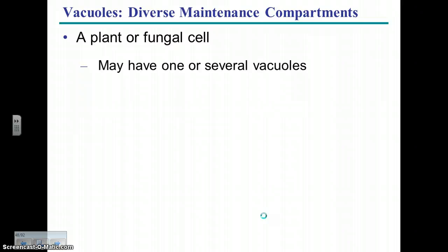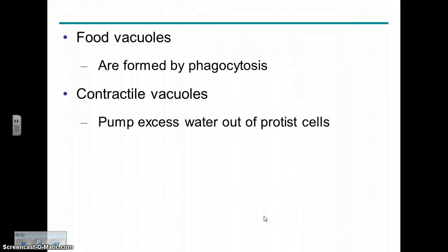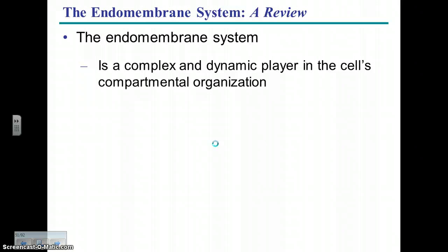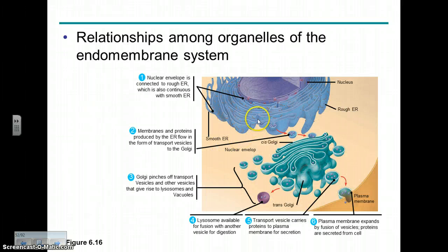Vacuoles are membrane-bound structures that are relatively large. We already saw a food vacuole. In some organisms like paramecia, contractile vacuoles pump out excess water. In plants, there is a very large central vacuole where water is stored, sometimes pigments and waste materials — it often takes up a large volume of the plant cell. That completes the endomembrane system: the ER, Golgi, transport vesicles, and vacuoles.